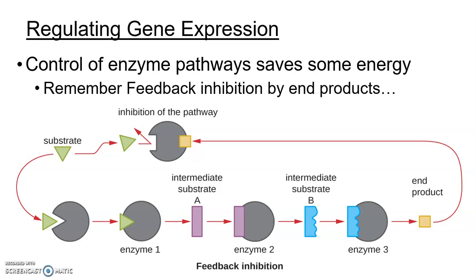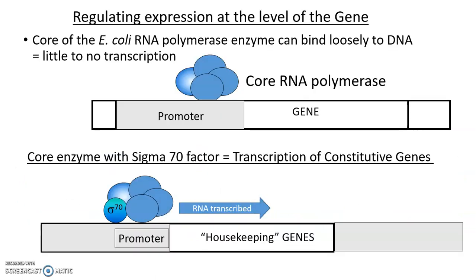All of that translation — your ribosome doing peptidyl transferase as it shuttles down the message — is going to use a huge amount of energy that the cell could potentially save, especially under conditions where they don't need that product. Looking at this at the level of the gene: E. coli RNA polymerase has a core of proteins that assemble and can bind loosely to DNA, maybe running into a promoter, but that core does not transcribe genes very well. Adding sigma 70 factor targets this holoenzyme to promoters, enabling effective transcription.